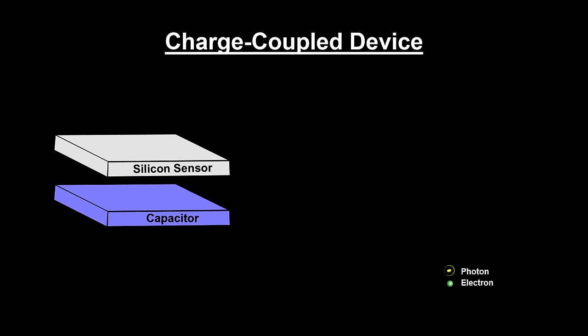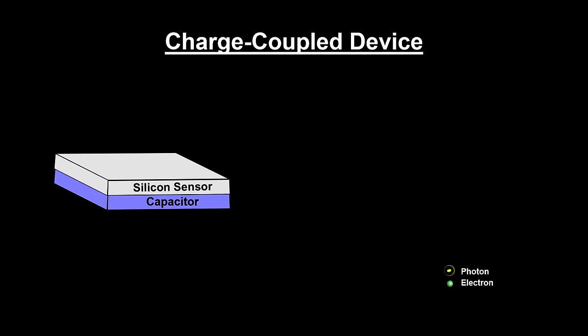All of this is miniaturized into an integrated circuit and represents one pixel. CCDs are made of thousands or even millions of these configured as an array.